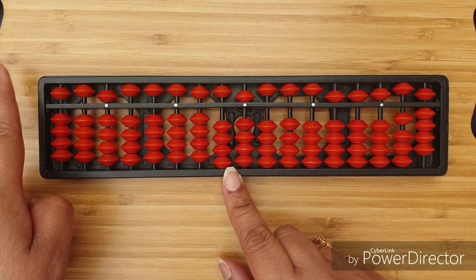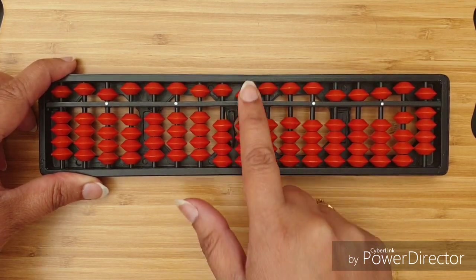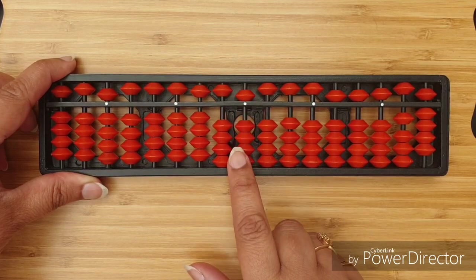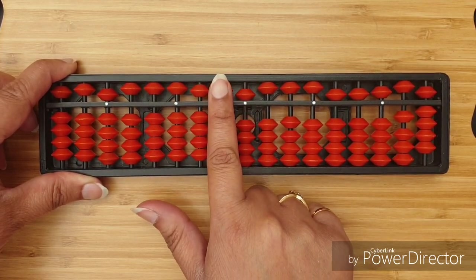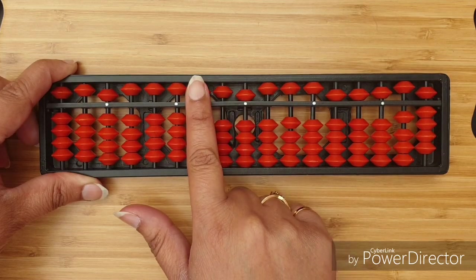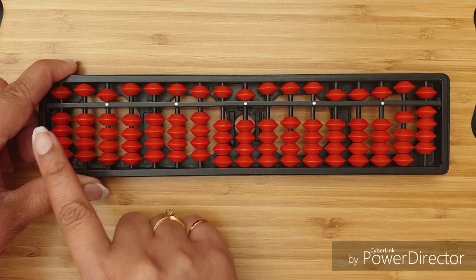So, consider if I am taking this middle white dot rod as my unit rod or my 1's rod. This will be my 10's rod, this will be my 100's rod, this will be my 1000's rod, and so on.